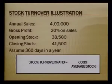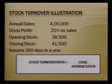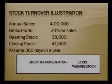Let us take an illustration to compute the stock turnover ratio. Total sales are four lakh rupees, gross profit is 20% of sales which equals eighty thousand. Opening stock is thirty-eight thousand five hundred and closing stock is forty-one thousand five hundred. The formula is cost of goods sold divided by average stock.